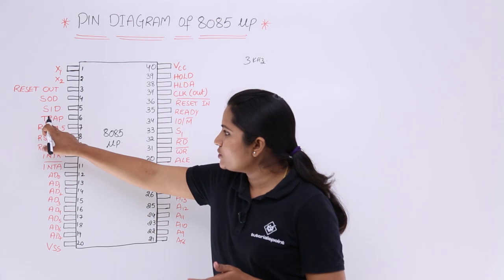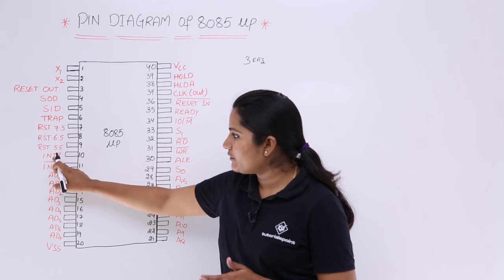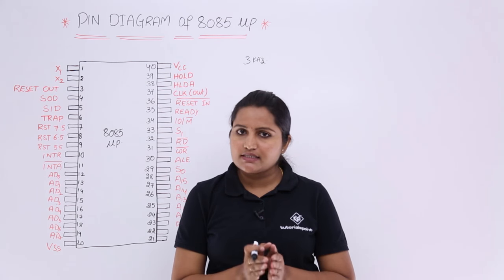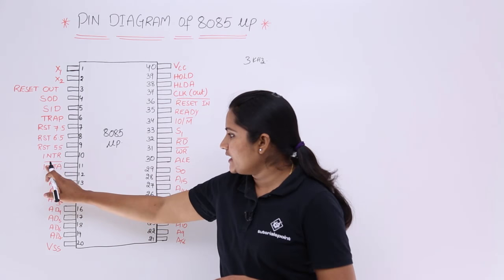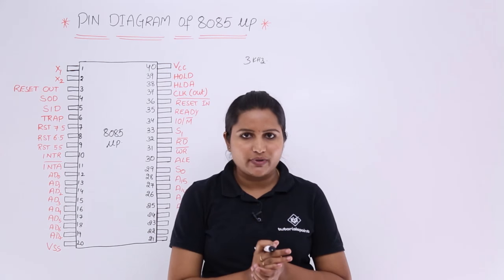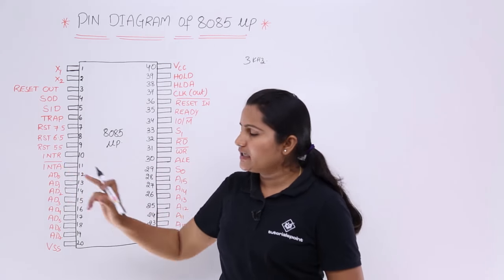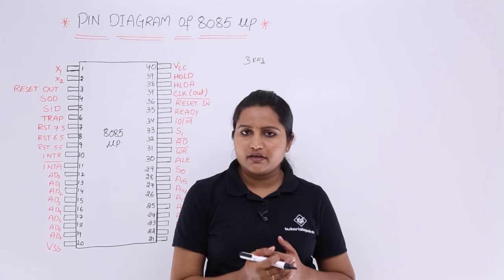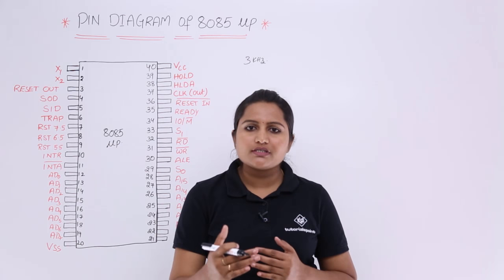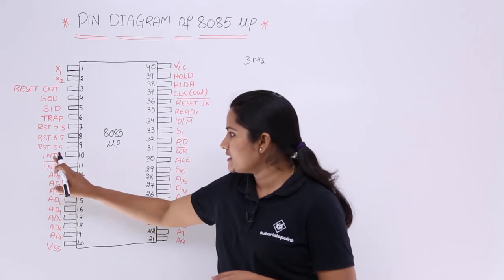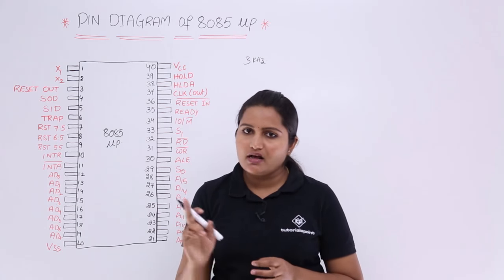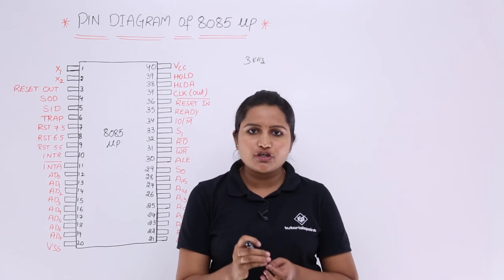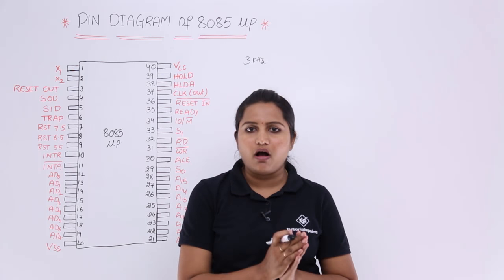TRAP, RST 7.5, RST 6.5, RST 5.5, INTR, and INTA are all related to interrupts. These interrupts will be discussed separately in the next class. INTA is interrupt acknowledgement and is an active low signal — whenever these interrupts are enabled, INTA bar goes to 0. Whenever you see a bar on any pin, it is active low, meaning it processes at 0 and turns off at 1.